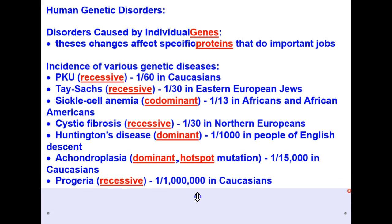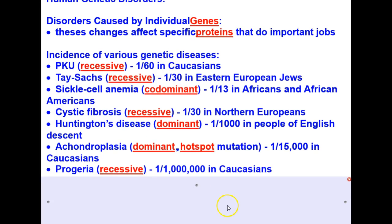Progeria is a recessive genetic disorder, 1 in 1,000 in Caucasians. Then ALS, also known as Lou Gehrig's disease, is a recessive genetic disorder. 1 in 600 in Caucasians.